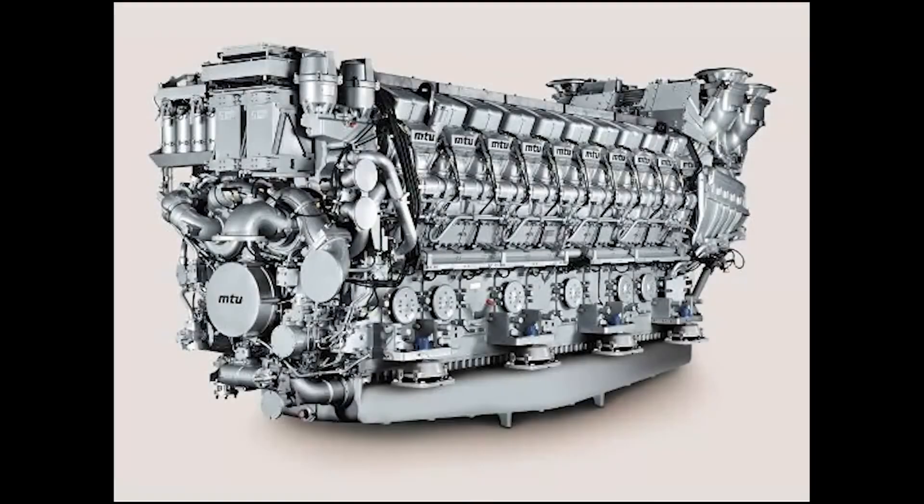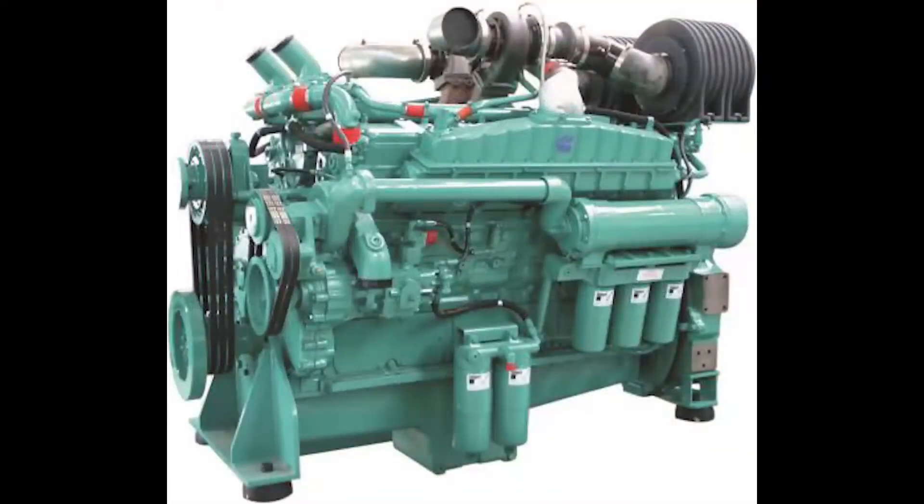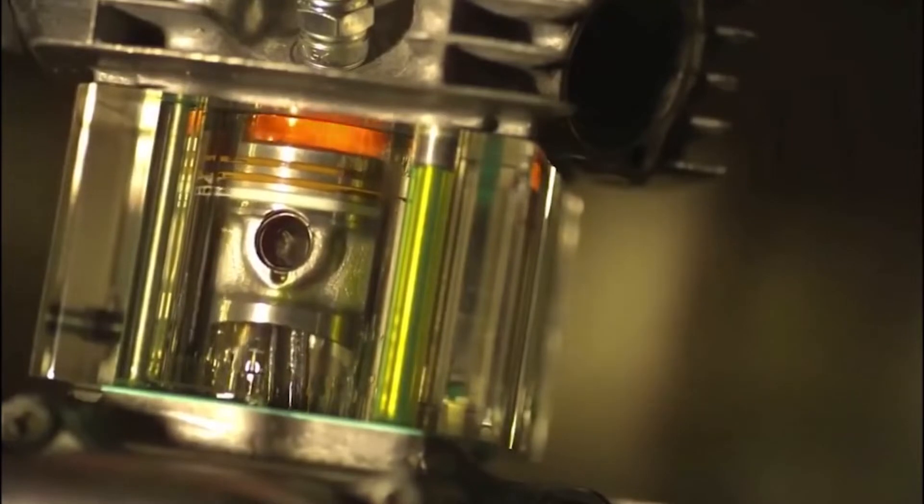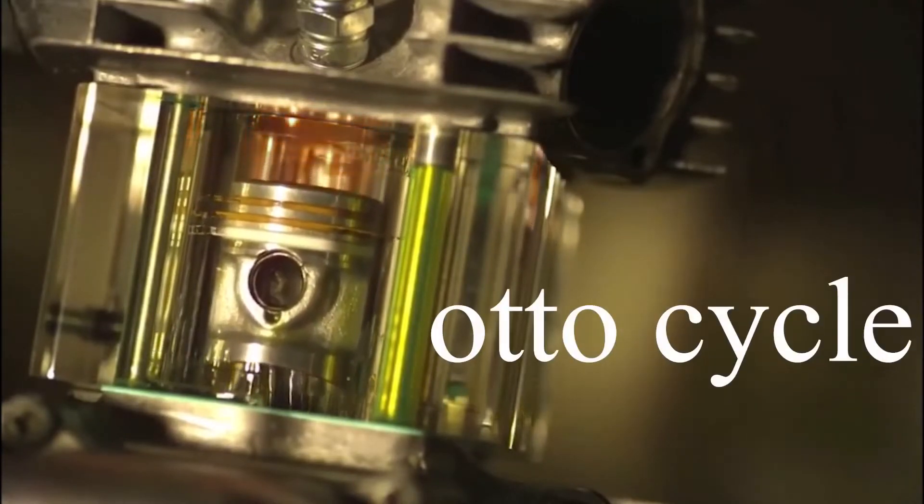There are various types of internal combustion engines, but for now we'll be discussing the spark ignition engine which operates on a thermodynamic cycle called the Otto cycle.